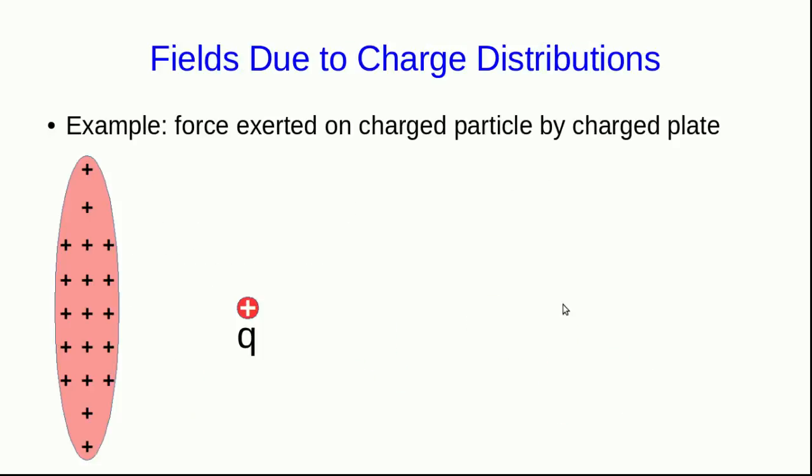We are very often concerned with the motion of charged particles under the influence of other charged particles. For example, at one level, that's what chemistry is all about. However, we're also often interested in the effect of charge distributions on charges. So for example, we might think of a charged particle near a charged plate. This sort of thing comes up all the time in various types of electronics and other devices. How do we do this? Because Coulomb's law certainly doesn't apply here. We can't use Coulomb's law to calculate the force that this plate exerts on this charge.